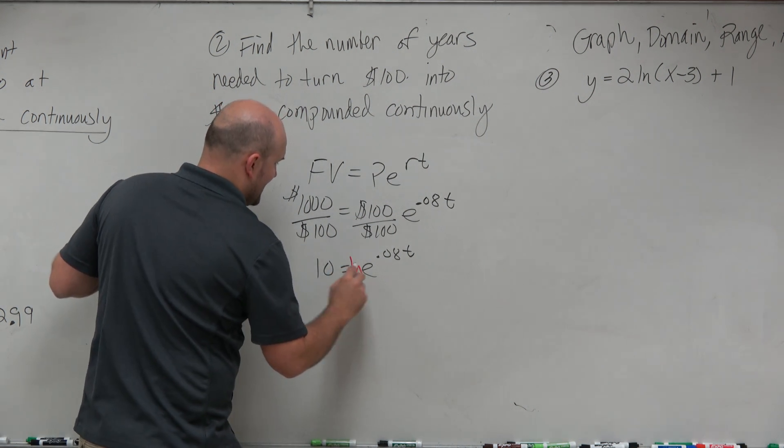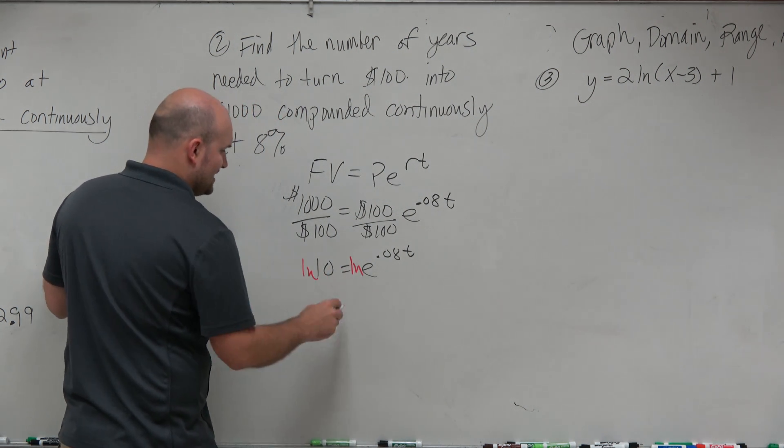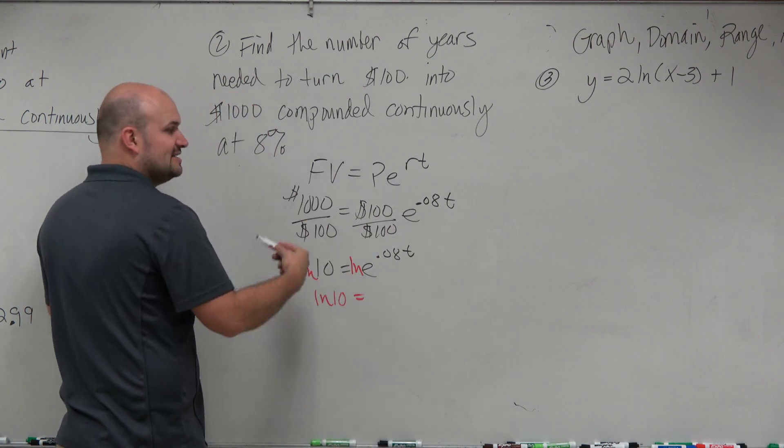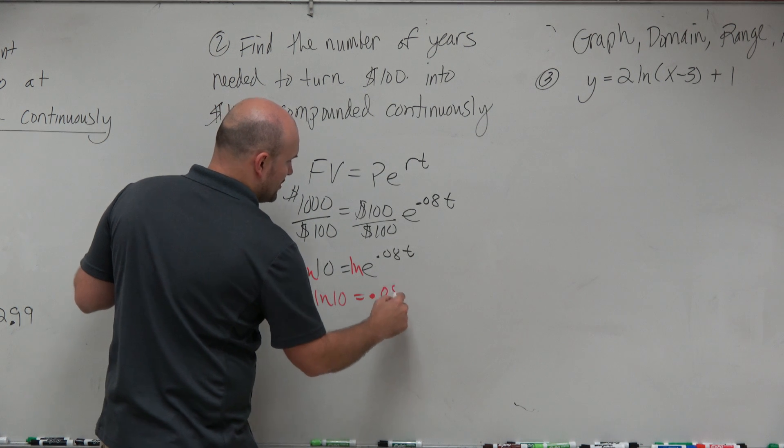So what I'm going to do is take the ln of both sides. So therefore, we have the ln of 10 is equal to ln of E undoes that. So you're just left with 0.08 T.